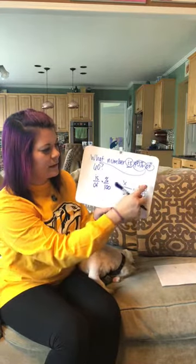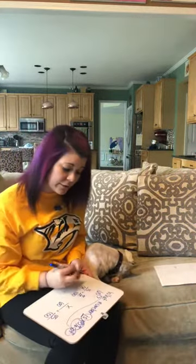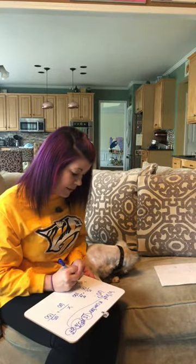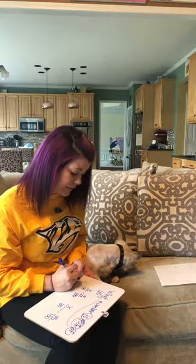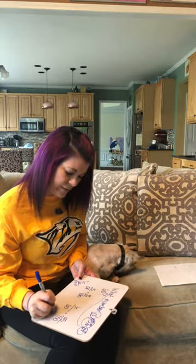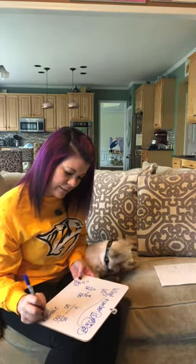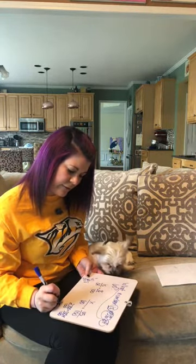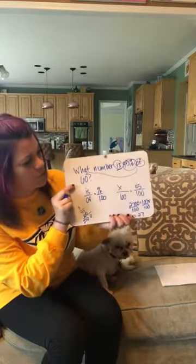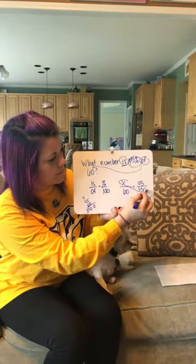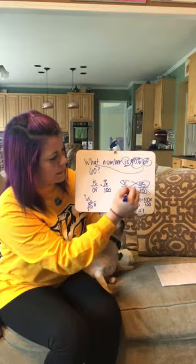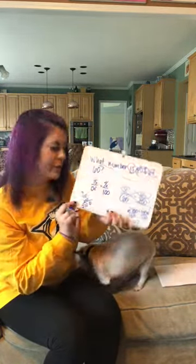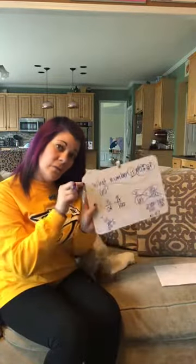We're looking for the 'is,' which is our unknown x. We solve by the butterfly method: 60 times 45 equals 2700, and 100 times x equals 100x. So 2700 divided by 100 gives x equals 27. That's how you solve percent proportions — is over of equals percent over 100, then cross-multiply and divide.